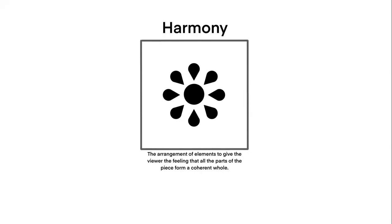Next up is harmony. Harmony is the arrangement of elements to give the viewer the feeling that all parts of a piece form a coherent whole. In this composition, we have two different shapes and when we put them together, they seem cohesive. They seem like they go together. They form another shape. For example, it could be a sun or a flower.